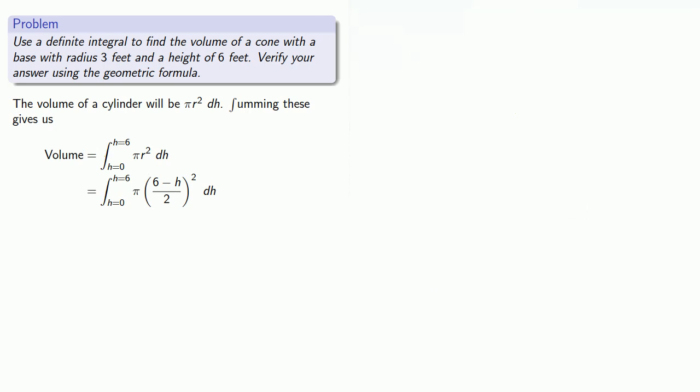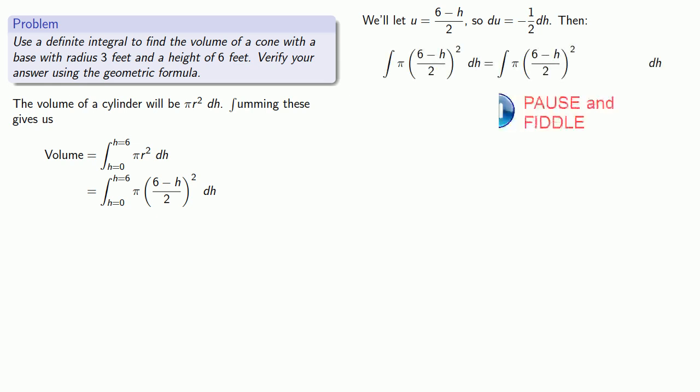Here we'll do a u-substitution. We'll let u equal (6 minus h) over 2. So du will be minus 1 half dh. We'll manipulate our integrand so we get a minus 1 half dh in it. This constant minus 2 can be moved to the front. We can do our u-substitution and our du-substitution. And we get an integral that we can evaluate.